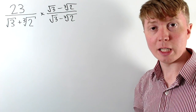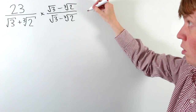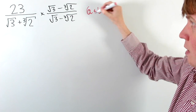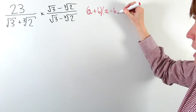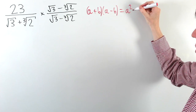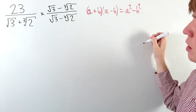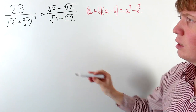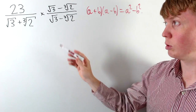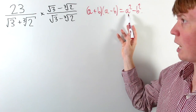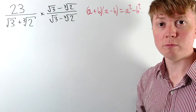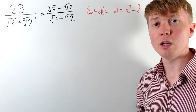In the denominator we're essentially following the structure of difference of two squares: a plus b multiplied by a minus b is always equivalent to a squared minus b squared. So our root 3 term in the new denominator becomes root 3 squared, with no other root 3 terms, so we've replaced that now by an integer.